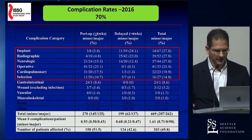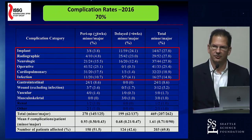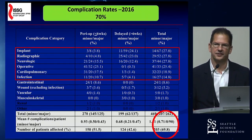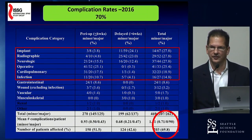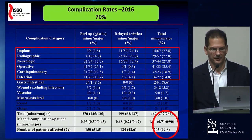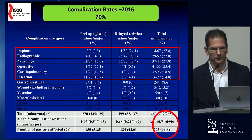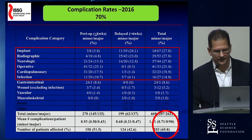Looking at Justin Smith's work on complication rates in ASD overall, the average is about 70%. So we're doing more operations on older people who are frail and expected to have more complications. These are expensive operations. There's a high prevalence of these patients. This is a big problem, potentially.